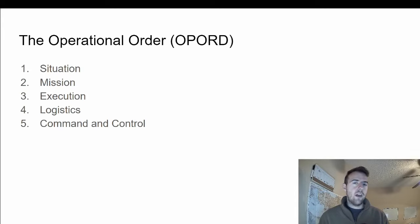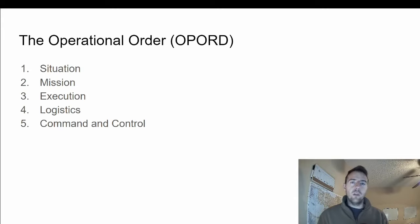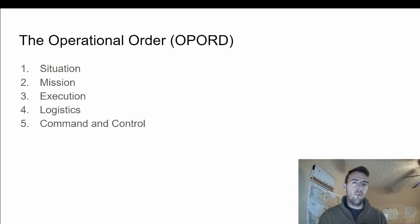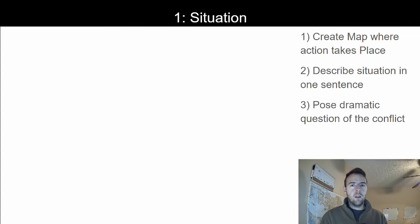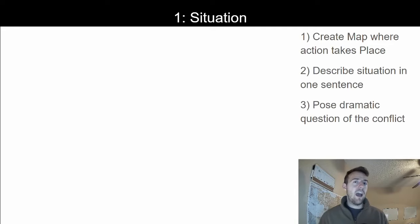The first step is to define the situation as well as the mission itself. The third step is to list how the mission is going to be executed, and then the fourth and fifth describe the logistics and command and control associated with it. We're going to go through each of those five different steps, break them up into sub-components, and talk about how we can use them to flesh out our Dungeons & Dragons bad guys.